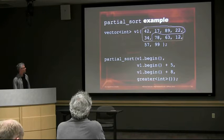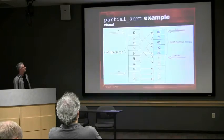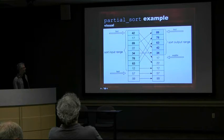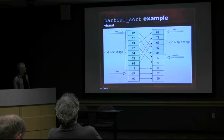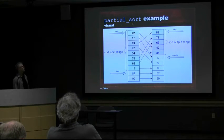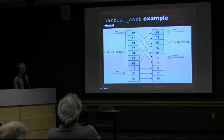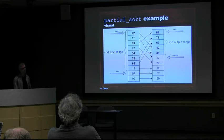Everything from the sorted range makes it to the output, but because we're only sorting the top five with a reverse sort — going from biggest to smallest — everything biggest gets sorted. 17, 22, and 12 fall below 34 but were from the input range and appear in undetermined order. The two omitted items are just copied over unmodified. That's your partial_sort.